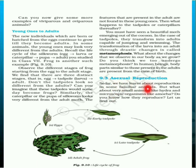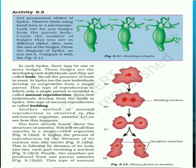Next is asexual reproduction. In asexual reproduction, a single parent gives rise to a new individual — no two parents are involved. In sexual reproduction both male and female are involved, but in asexual reproduction only one parent gives rise to the individual. Two examples given are hydra and amoeba.